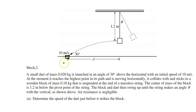So we have our dart down here, which is a mass of 0.02 kilograms. The block up here is 0.1 kilograms. When the dart reaches the top, it's going 100% horizontal — right before it strikes the block. This looks like a constant acceleration projectile free-fall problem. I always label my two points.